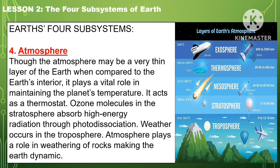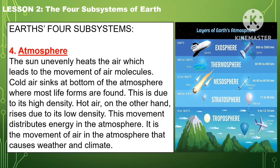Though the atmosphere may be a very thin layer of the Earth when compared to the Earth's interior, it plays a vital role in maintaining the planet's temperature. It acts as a thermostat. Ozone molecules in the stratosphere absorb high energy radiation through photodissociation. Weather occurs in the troposphere. The atmosphere plays a role in weathering of rocks, making the Earth dynamic. The sun unevenly heats the air, which leads to the movement of air molecules. Cold air sinks at the bottom of the atmosphere where most life forms are found, due to its high density. Hot air, on the other hand, rises due to its low density. This movement distributes energy in the atmosphere. It is the movement of air in the atmosphere that causes weather and climate change.